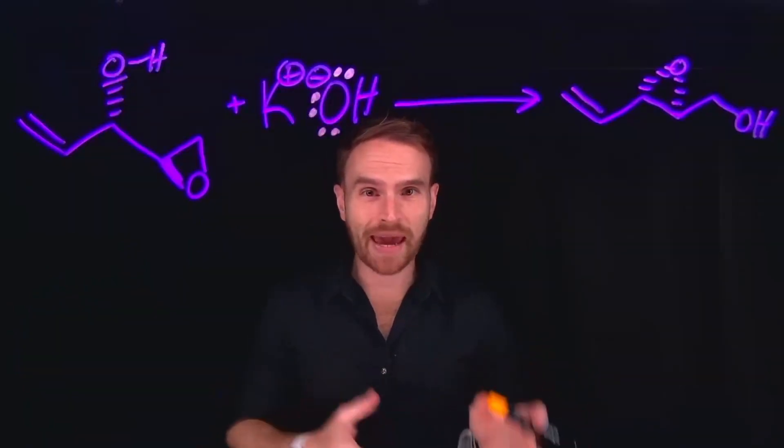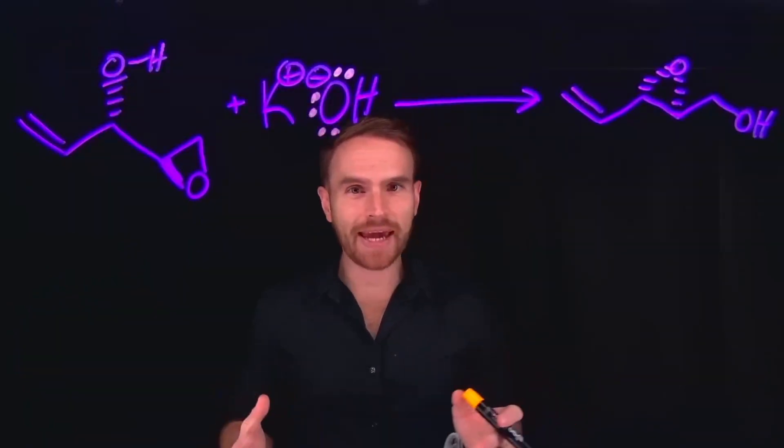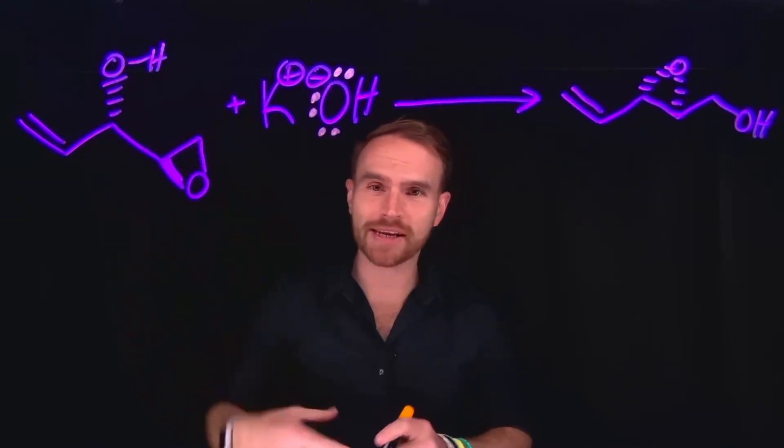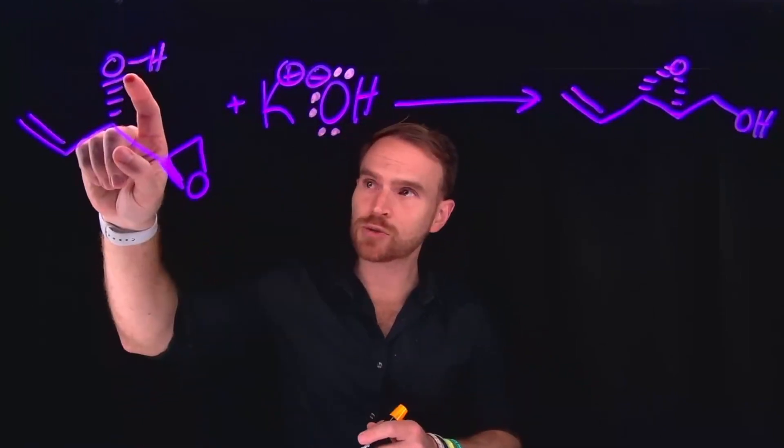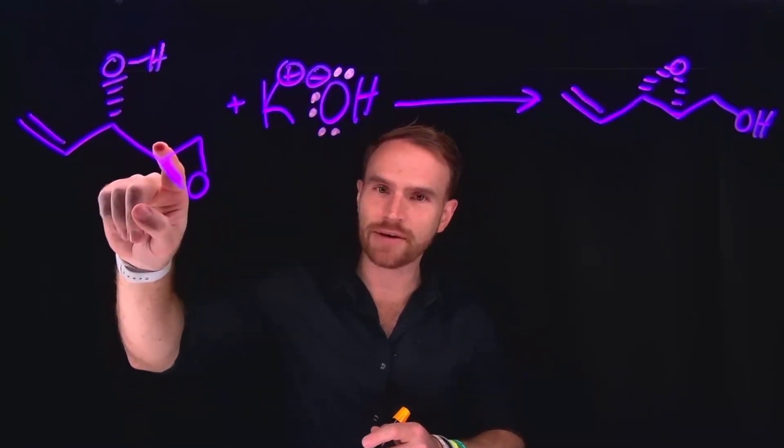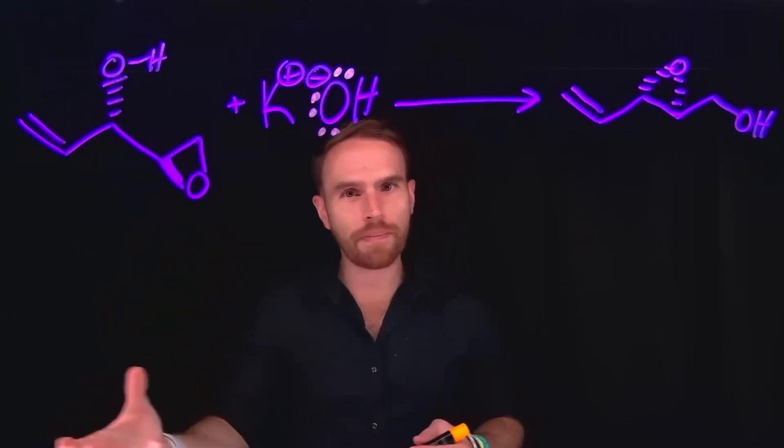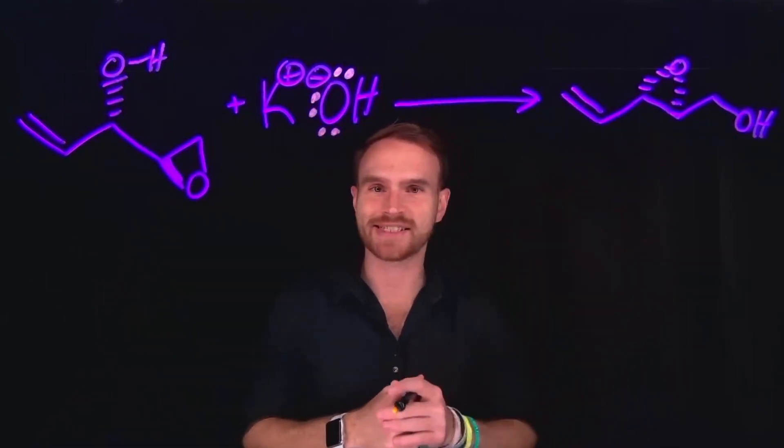This reaction is what's known as a Payne rearrangement. In a Payne rearrangement, you have a hydroxyl group that can be deprotonated by strongly basic conditions, which will result in the inverted nucleophilic attack of an epoxide carbon resulting in a new epoxide and a terminal carbon, as is the case in this example.